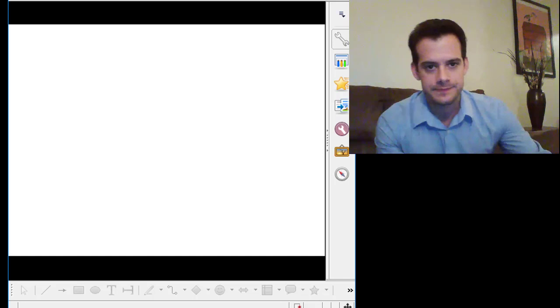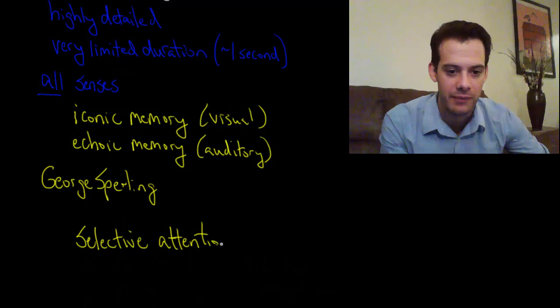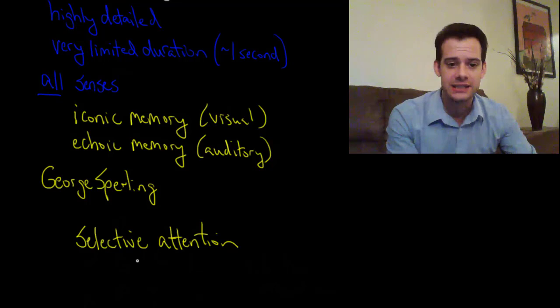And this brings us to the idea of selective attention. And that we can only attend to some of the things in our environment, some of the things that we see, some of the things that we hear, some of the things that we feel. We can only attend to so much at once. Our attention is by nature selective.